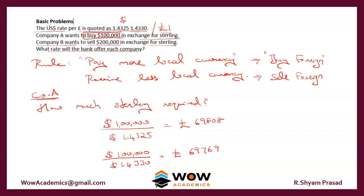Since Company A wants to buy dollars (foreign currency), they have to pay more local currency (pounds). So we select the rate that makes them pay more — that is 1.4325 — giving 69,808 pounds. This is the rate the bank will offer. Pay more local currency to buy foreign currency — that's the first rule.